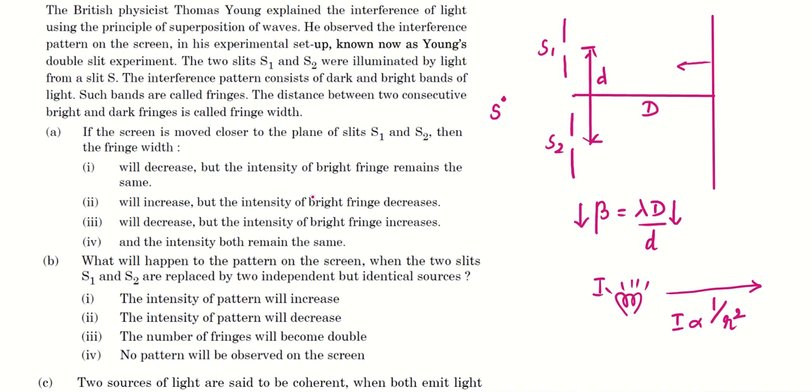So as you go away from the source, intensity is going to decrease. Now we are going closer to the source, so intensity will increase. So which means that it will decrease but the intensity of the bright fringe increases. So this should be the answer.